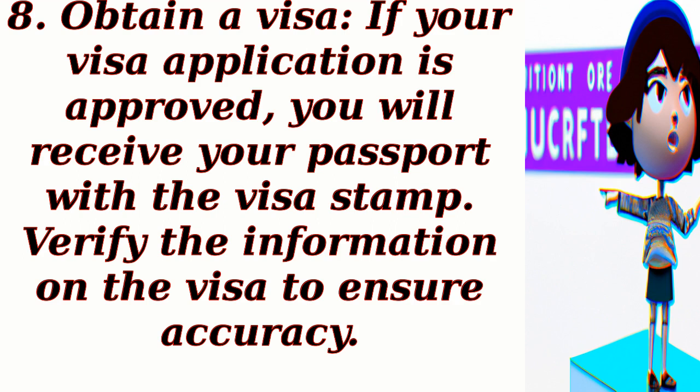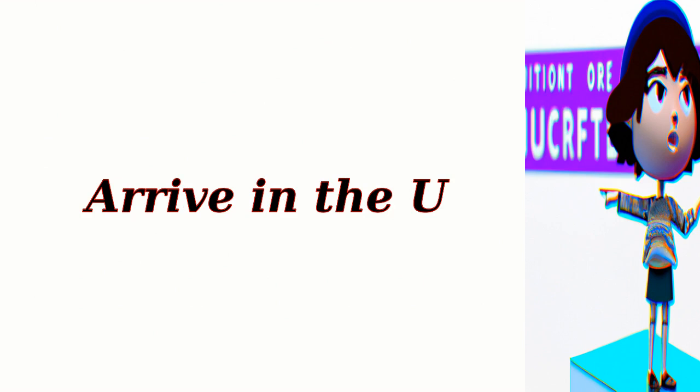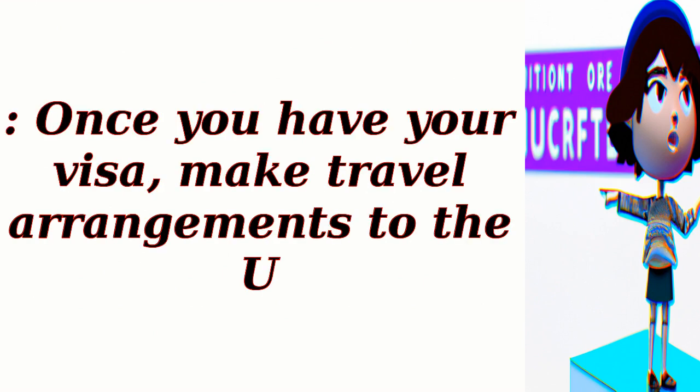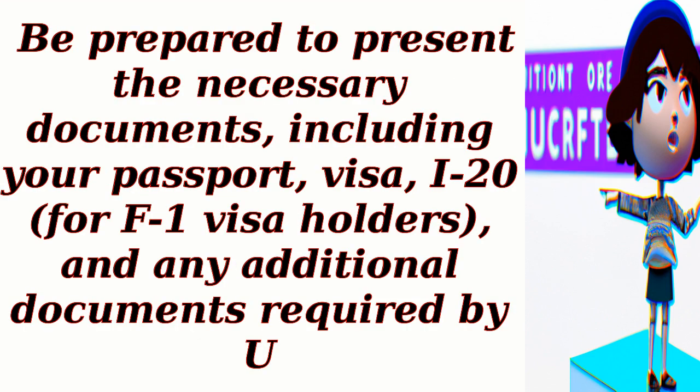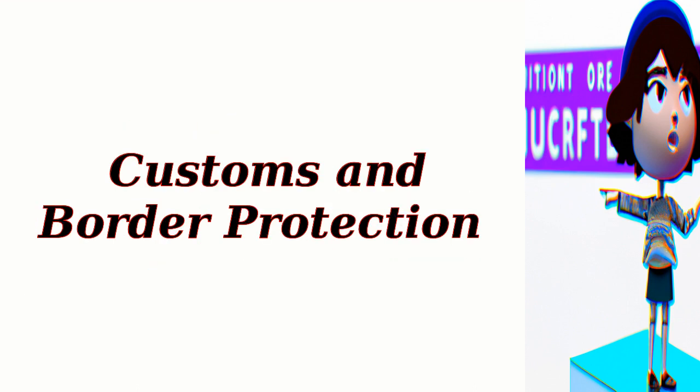Step 8: Obtain a visa. If your visa application is approved, you will receive your passport with the visa stamp. Verify the information on the visa to ensure accuracy. Step 9: Arrive in the U.S. Once you have your visa, make travel arrangements and arrive before the program start date. Be prepared to present necessary documents, including your passport, visa, I-20 for F1 visa holders, and any additional documents required by Customs and Border Protection.